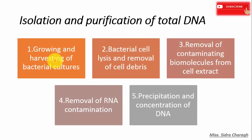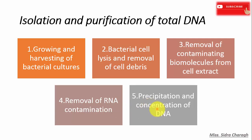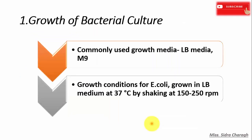The first step is growing and harvesting of bacterial cell culture, in case we are interested to isolate DNA from bacterial cells. The second step is bacterial cell lysis and removal of cell debris. In the third step, we remove contaminating biomolecules like proteins and RNA from cell extract. The fourth step is removal of RNA contamination by RNase enzyme, and the fifth step is precipitation and concentration of genomic DNA.